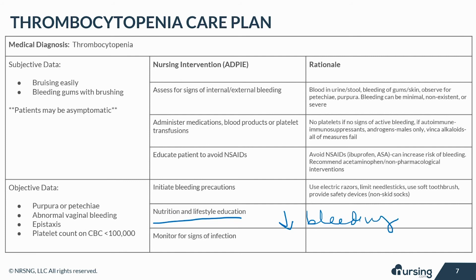Alcohol use should be avoided or at least limited because alcohol slows the production of platelets. NSAIDs could increase the likelihood of bleeding and should also be avoided. Increase the intake of green leafy vegetables as they are high in vitamin K, which helps to promote clotting.